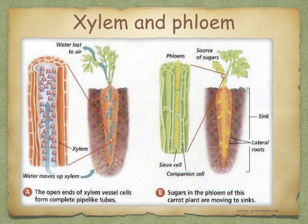Phloem tissues transport sucrose, amino acids, and hormones throughout the plant. Sucrose is a soluble complex sugar made especially for transporting energy. It's made in the leaves, where sugars from photosynthesis are converted into sucrose, and also converted from starch in storage organs such as swollen roots and stems. Substances are transported in the phloem in two directions: downwards from the leaves to the roots, and upwards from the leaves to the flowers, fruits, and buds, as well as from storage organs to new stems and leaves.